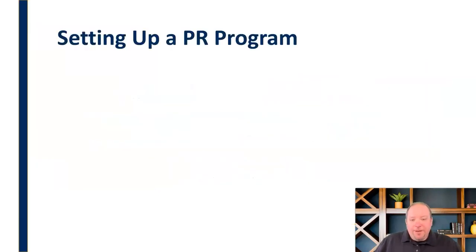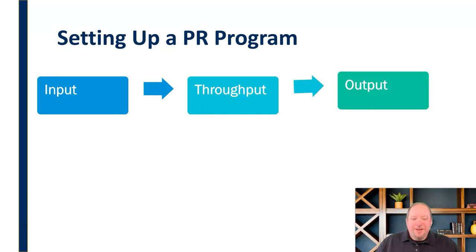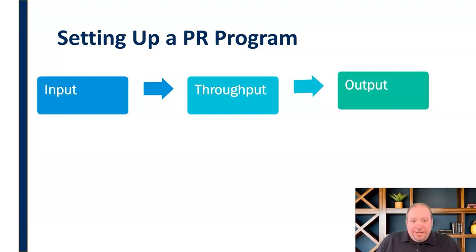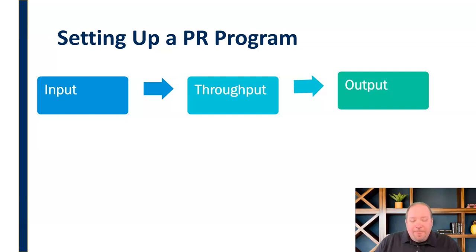When thinking about setting up a PR or media relations program, I like to think of things in a systems format. If you're familiar with systems, you know we're looking at input, throughput, and output. Everything in an organization has inputs — things we gather like a funnel — then we process those in the throughput area, and eventually we produce output as a product, service, or whatever it may be. Setting up a public relations program really involves all of these stages.